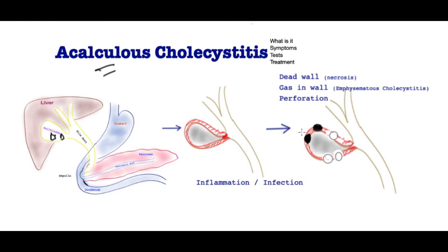This is dangerous because the process may lead to areas within the wall of the gallbladder losing blood supply and becoming necrotic — that is, dead tissue with no blood supply. Also, the wall of the gallbladder may develop an infection where gas is released within the gallbladder in small bubbles. Both of these processes radically increase the risk of the gallbladder perforating.